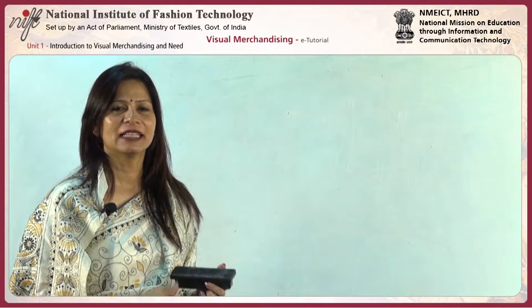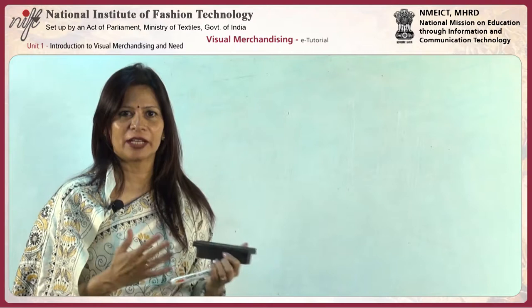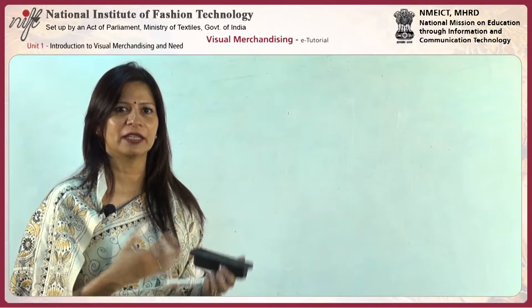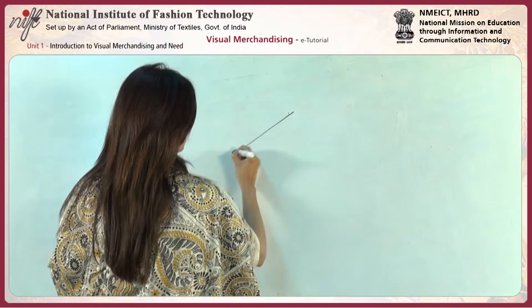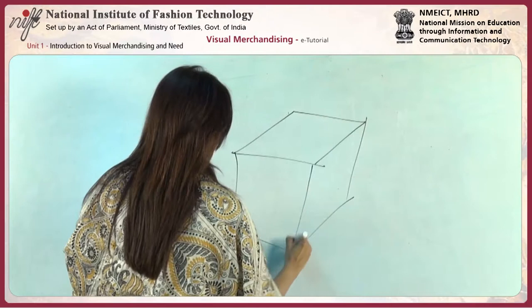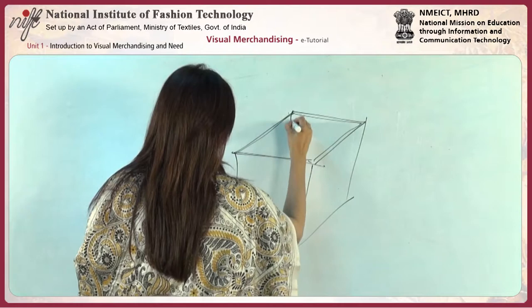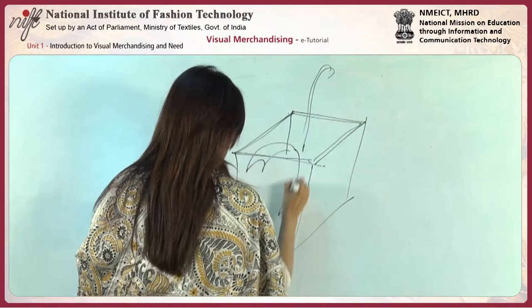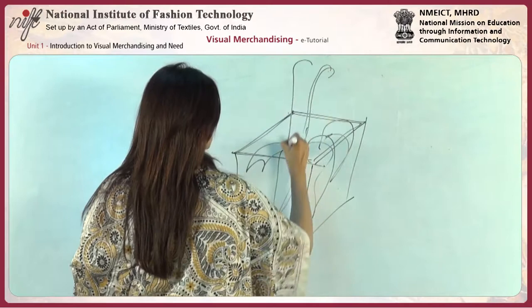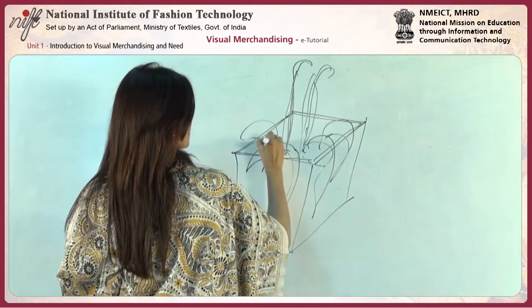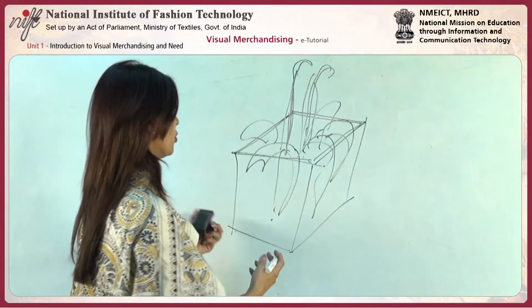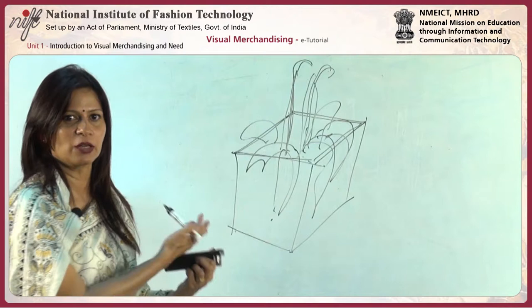The next type is bins and cubes. The difference is that bins are open on top while cubes are open on the sides. Bins are normally used when there are discounts going on, and cubes look similar to gondolas.